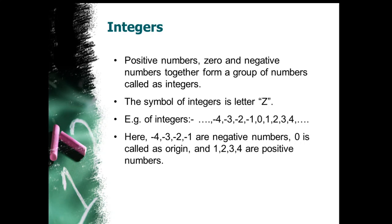Both sides — left and right — it is infinite. Here, minus 4, minus 3, minus 2, minus 1 are negative numbers. 0 is the origin, which is neither positive nor negative. And 1, 2, 3, 4 are positive numbers, which we have learned in natural numbers.